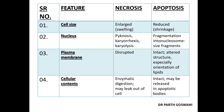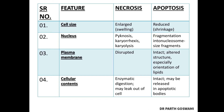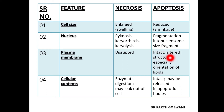In apoptosis, the cellular content is intact — there is no enzymatic digestion. The cellular content is released into cytoplasmic protrusions which are separated from the plasma membrane, and these are known as apoptotic bodies. The cell membrane is not damaged but is altered, forming apoptotic bodies containing the cellular content.